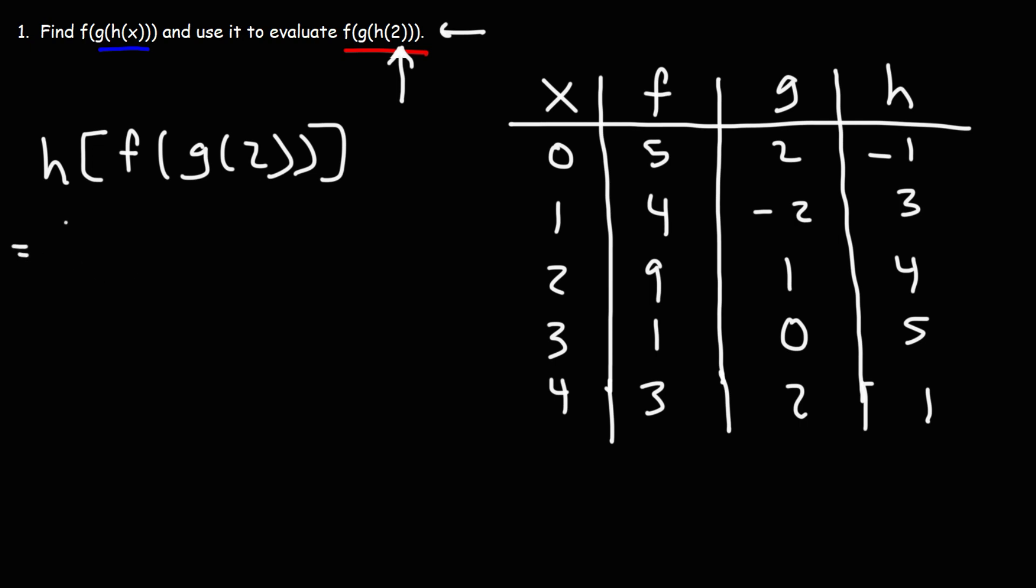So let's start with g of 2. Here we have g. Here's 2. They intersect at 1. So g of 2 is equal to 1.